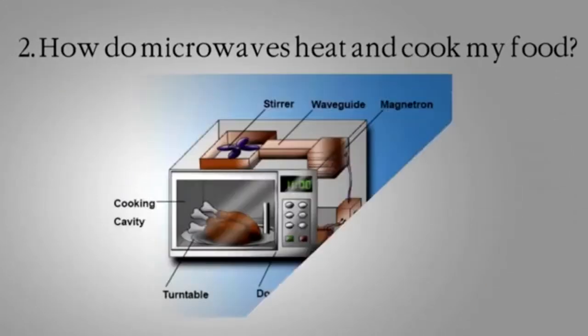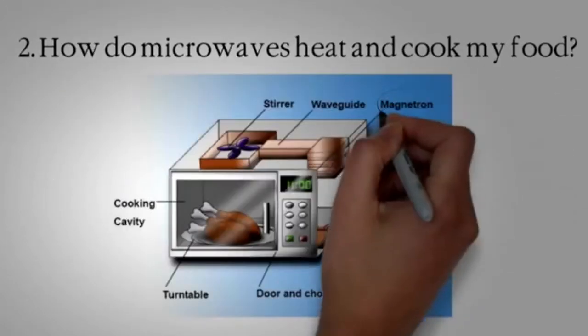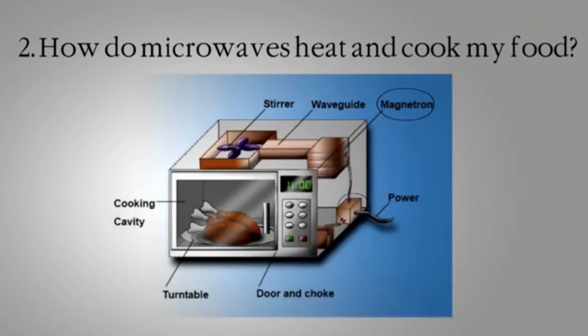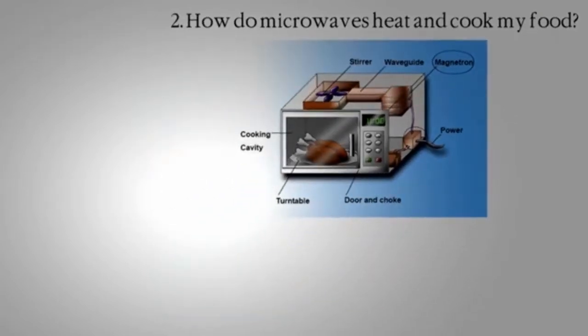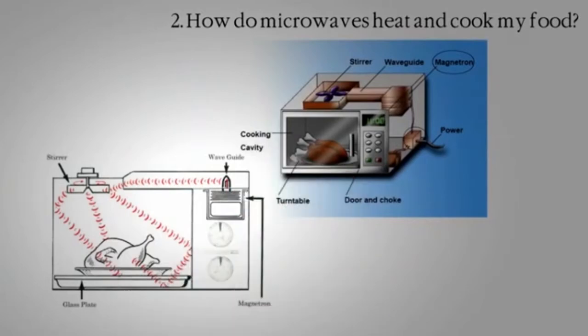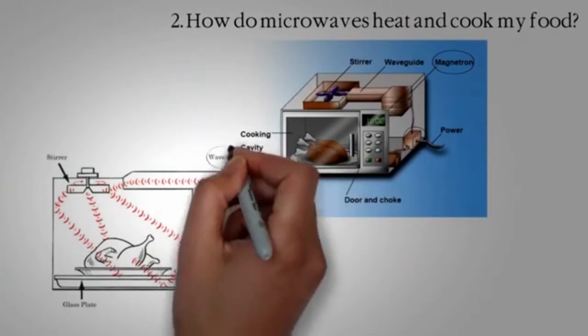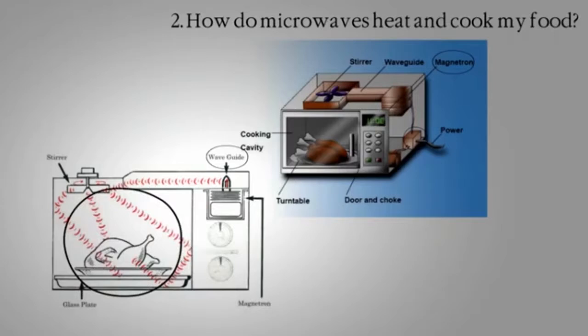How does the microwave actually heat the food? The microwave has a magnetron that converts electric energy into microwave. The wave will travel through a waveguide and finally enter the cavity where food is located.